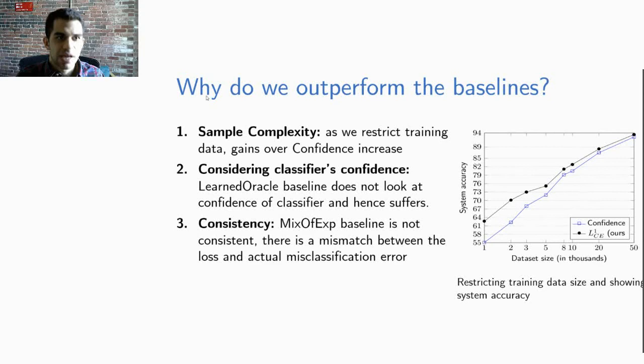Finally the third reason is that of consistency. The mixture of expert baseline is not consistent. There is a clear mismatch between the loss and the actual error of the system.